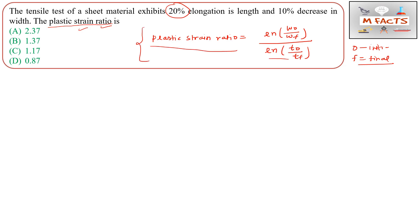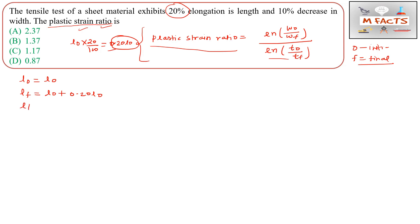In this question they say there is 20% elongation in length. So if l₀ is the initial length, then the elongation is l₀ multiplied by 20/100, which is 0.20·l₀. Therefore lf equals l₀ plus 0.20·l₀, which gives lf equals 1.2·l₀.